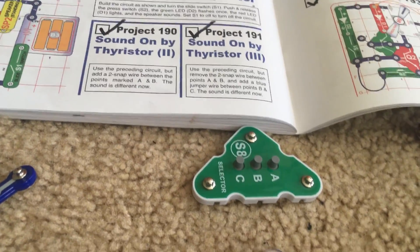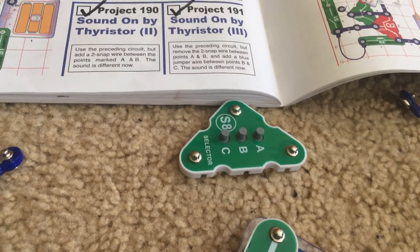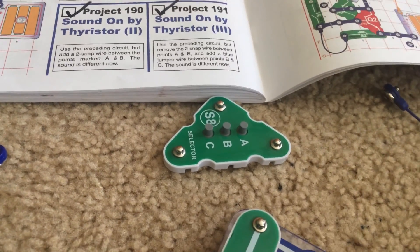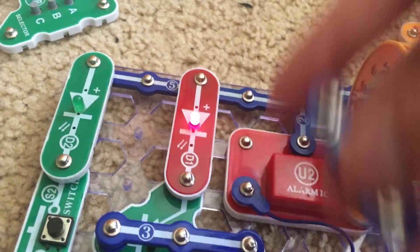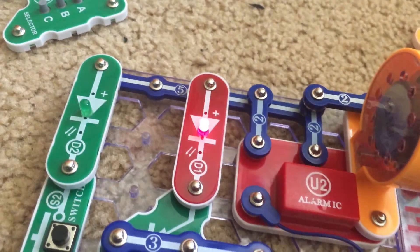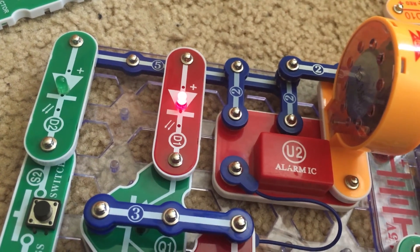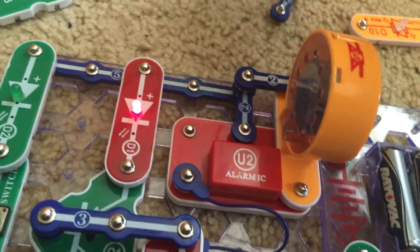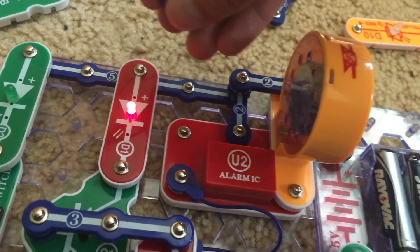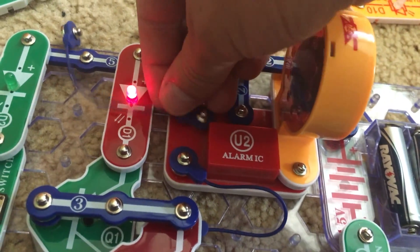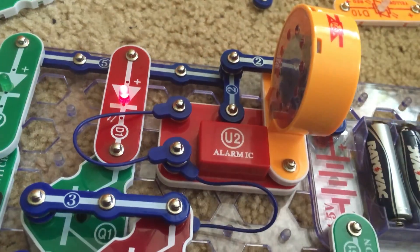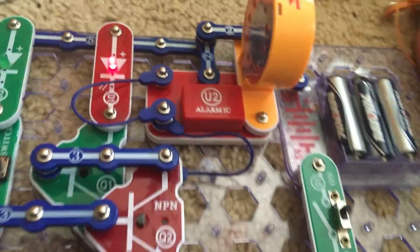Now for the variants, 190 and 191, we are going to use a two snap wire and a jumper wire. For 190, we will use the two snap wire and insert it between these two points on the alarm integrated circuit. Now we have a different sound. For 191, we are going to remove the two snap wire and place the blue jumper wire between points B and C. The sound isn't really right, but it's supposed to be the European siren.